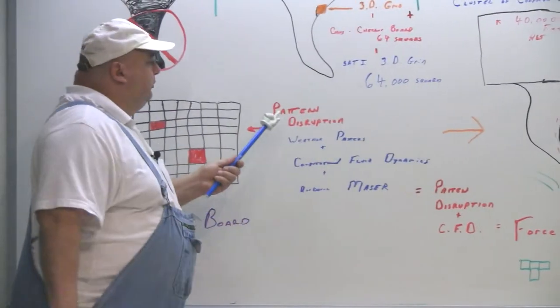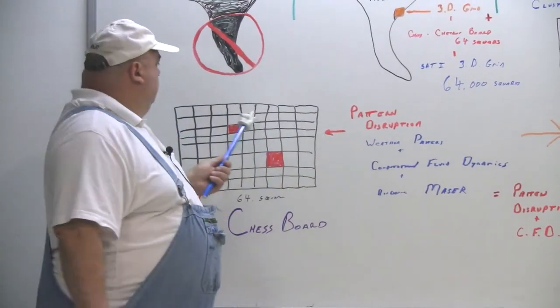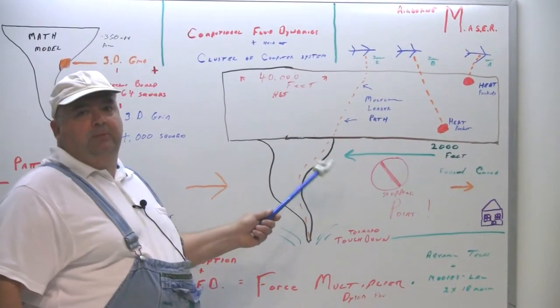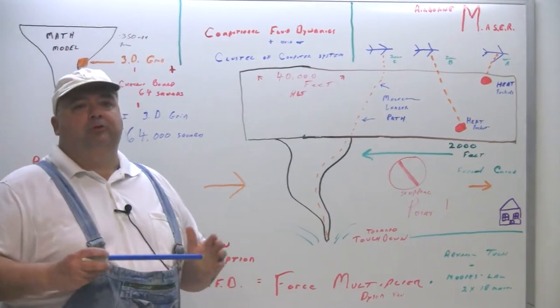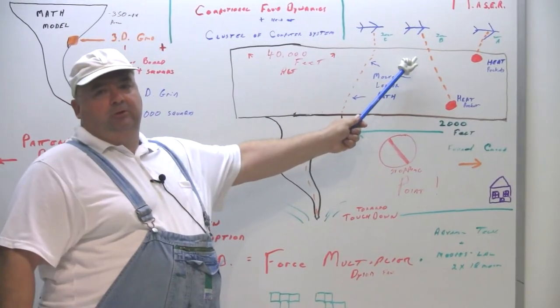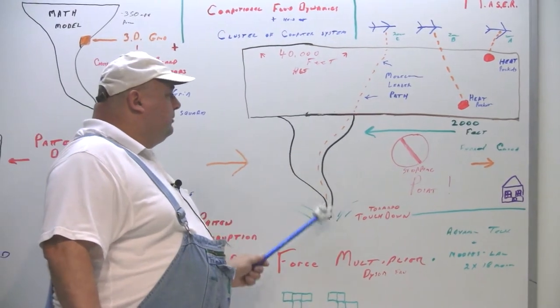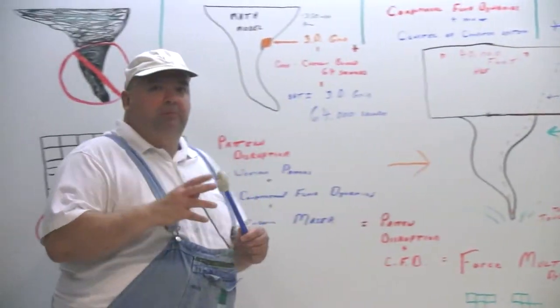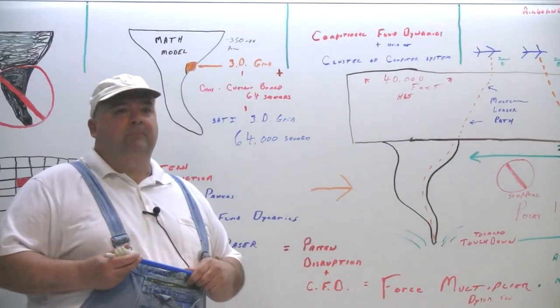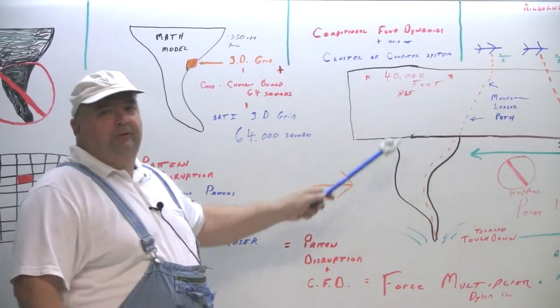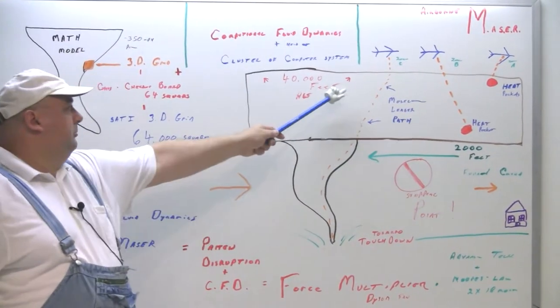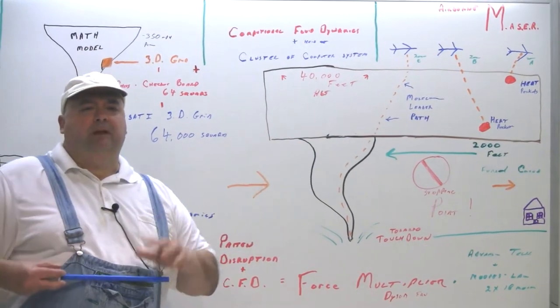But anyway, this is where this would come in. What I'll use is pattern disruption. Up here, at these points, up here and here, ahead of the tornado, before it gets there. I want to disrupt the pattern before it gets to it, so I can prevent it from actually coming down. So always remember, with the computational fluid dynamics in time, we will be able to predict all this. And I want to be able to manipulate it at different spots. The molecule leader path I'll get to later.